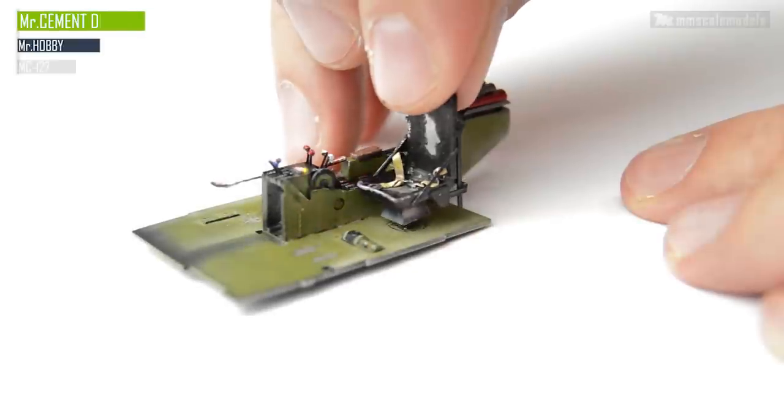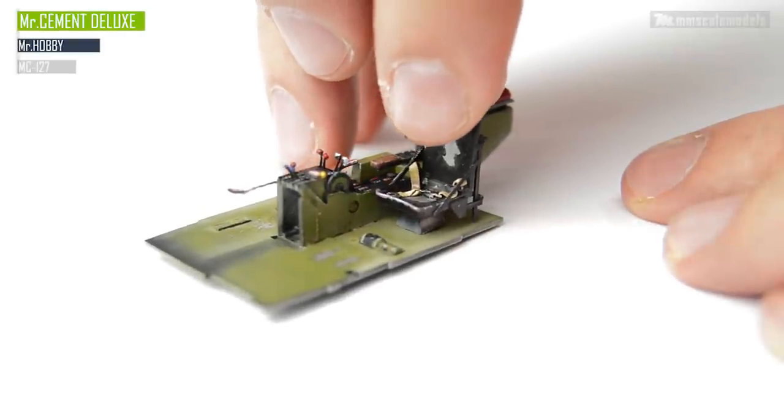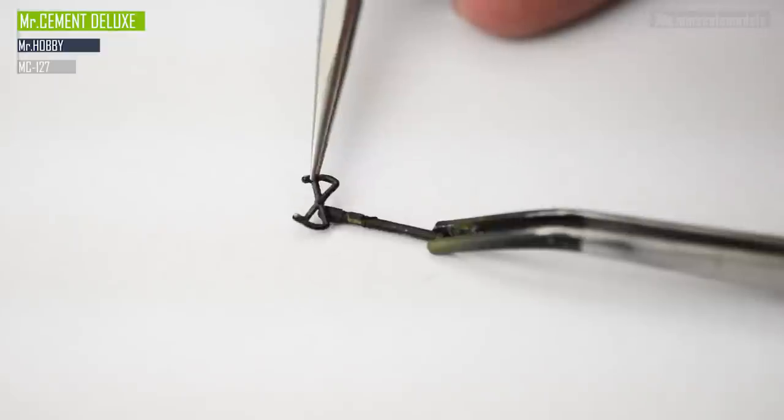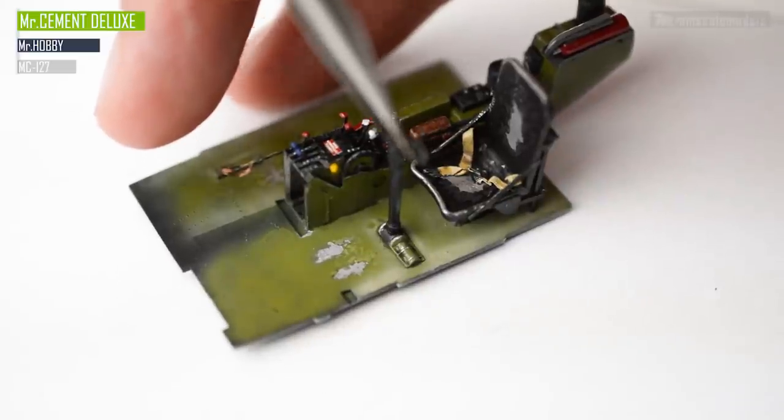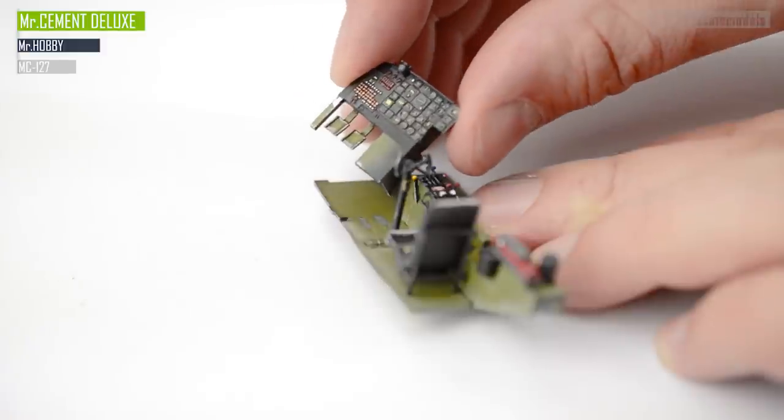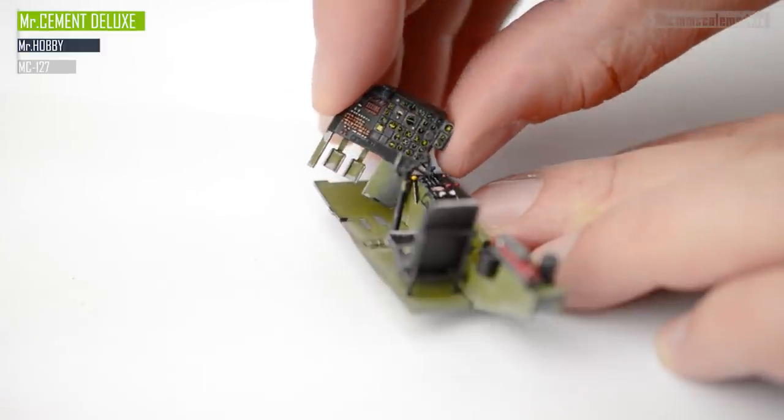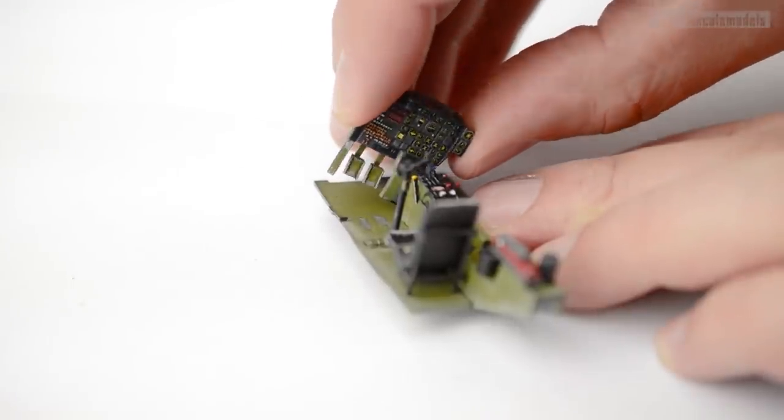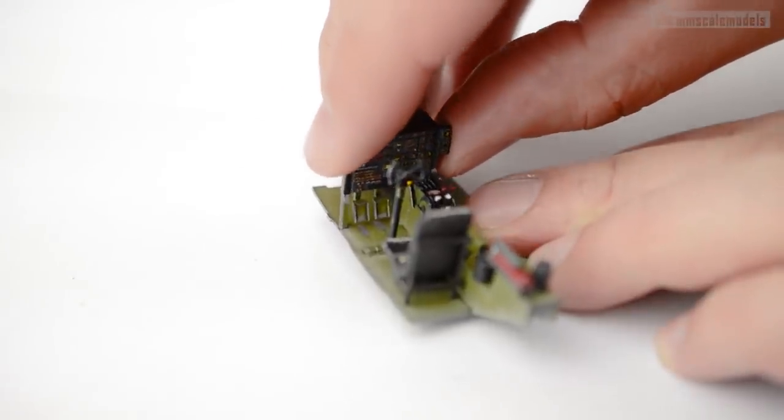In the meantime let's assemble the cockpit. First comes the pilot seat which fits nicely, then the yoke meets the control column and they both get glued on the cockpit floor. The instrument panel needs to be maneuvered around the wire loom but eventually it will take its place into this composition.